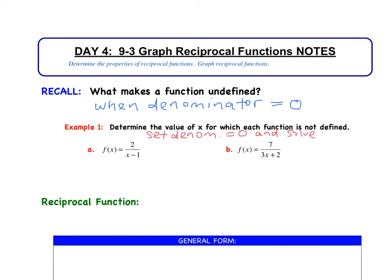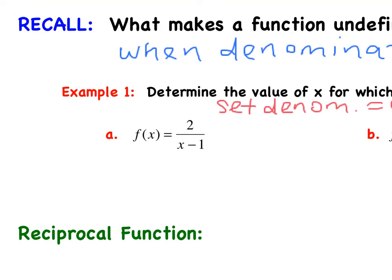So what we're going to do is determine the value of x for which each function is not defined. It is not defined when the denominator equals 0. So all we need to do is set the denominator equal to 0 and solve. So x minus 1 equals 0, and therefore we get x equals 1. It's undefined when x equals 1.